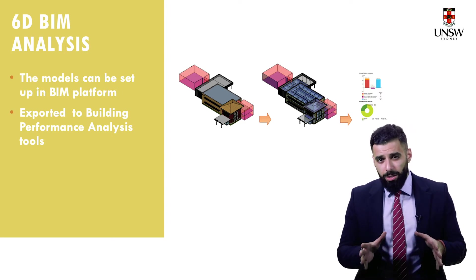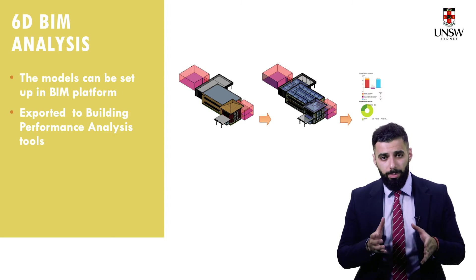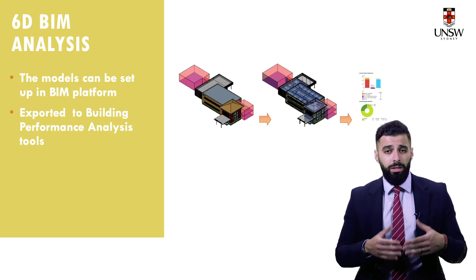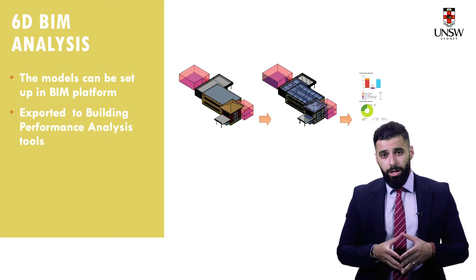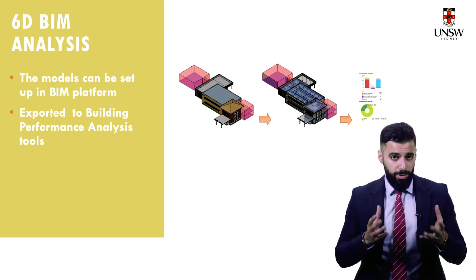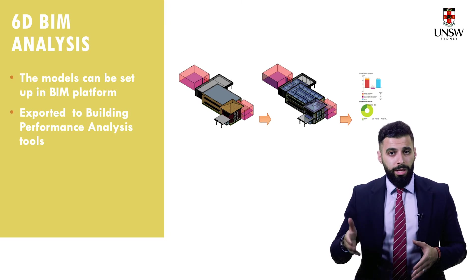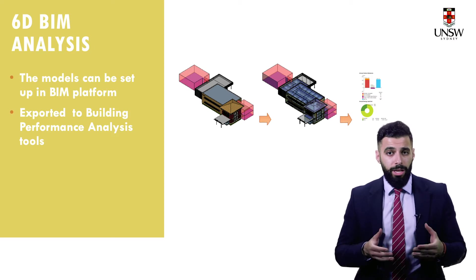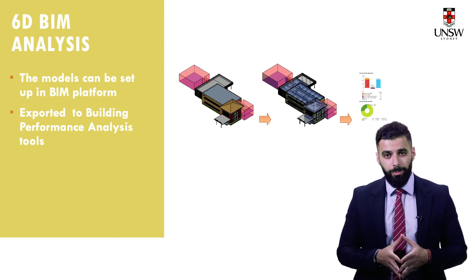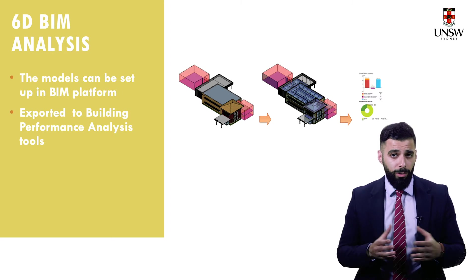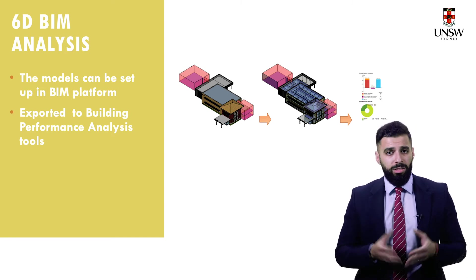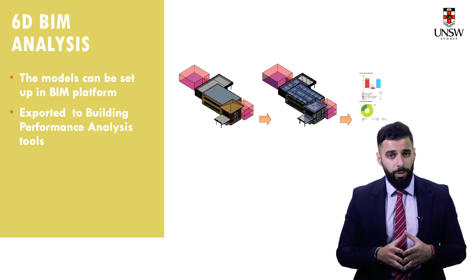The important question is how do you implement 6D BIM? Take for instance Revit. If you want to conduct an energy analysis to figure out the energy consumption of the building during summer and winter, you can convert the RVT Revit model file into GBXML file format, and then send that GBXML file to EnergyPlus, which is an energy simulation software, to conduct your energy analysis. You can also convert your Revit file into FBX format and send it to a software such as Autodesk CFD Ultimate to conduct air flow simulations.